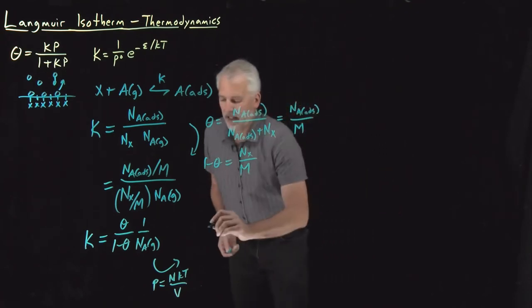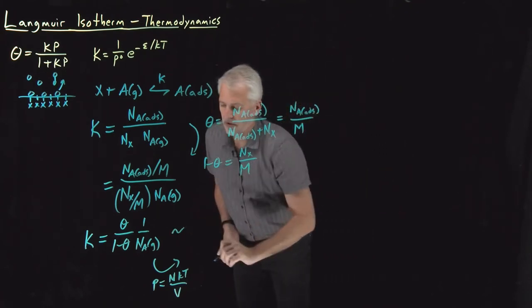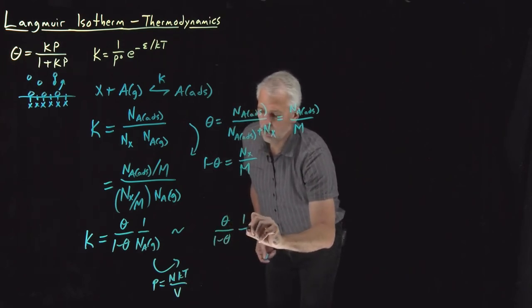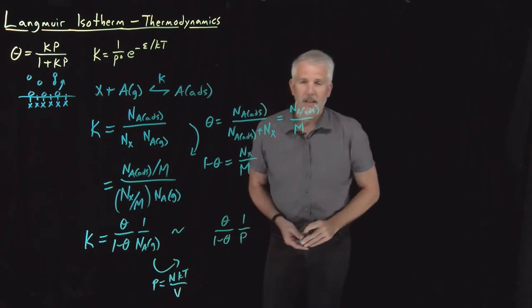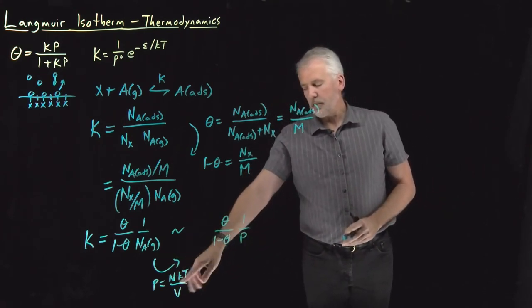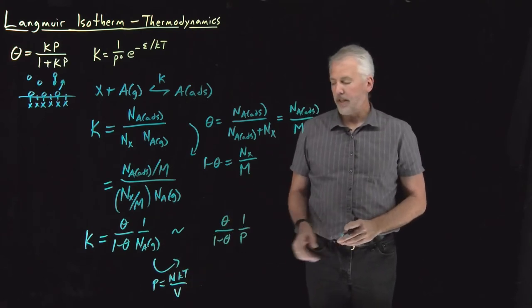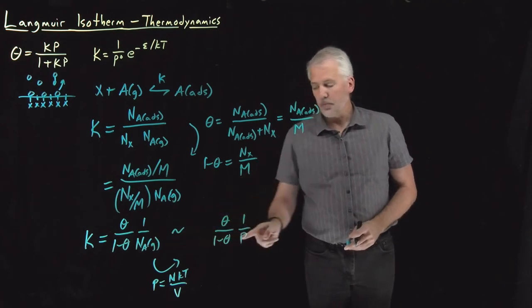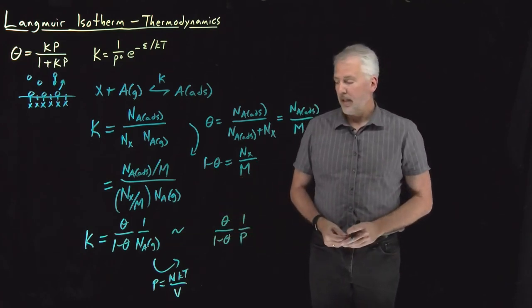So I can say this is at least proportional to theta over 1 minus theta, not 1 over n, but 1 over p. So instead of actually doing the multiplying by kt over v, I've just said 1 over n is proportional to 1 over p. And in fact,